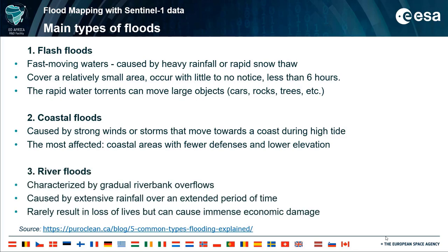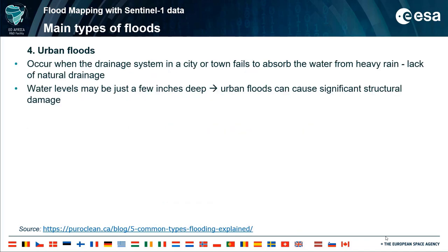Third are river floods, characterized by gradual riverbank overflows caused by extensive rainfall over an extended period of time. The areas covered by river floods depend on the size of the river and the amount of rainfall. River floods rarely result in loss of lives but can cause immense economic damage. Fourth are urban floods, which occur when the drainage system in a city or town fails to absorb the water from heavy rain. Water flows out into the street, making driving quite dangerous. Although water levels can be just a few centimeters deep, urban floods can cause significant structural damage.